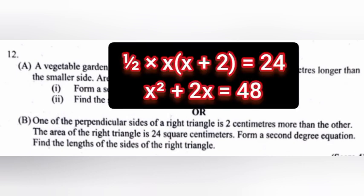Answer. Second degree equation: Half into x of x plus 2 equal 24. x square plus 2x equal 48.